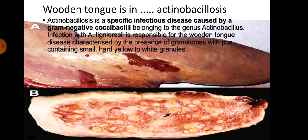Wooden tongue is the other name of actinobacillosis. Actinobacillosis is a specific infectious disease caused by gram-negative coccobacilli belonging to the genus Actinobacillus. Infection with Actinobacillus lignieresii is responsible for wooden tongue, characterized by the presence of granulomas with pus containing small, hard, yellow to white granules.